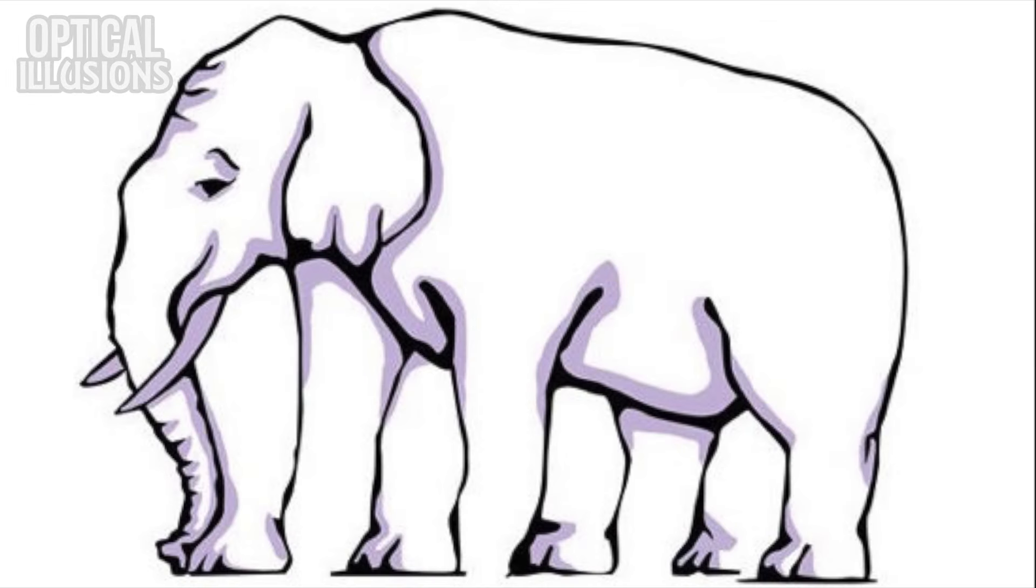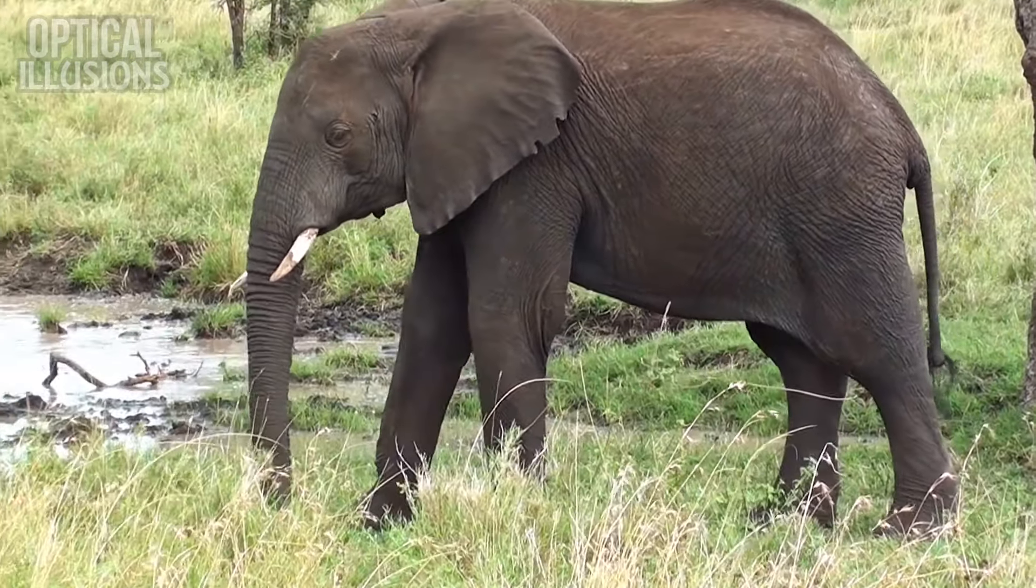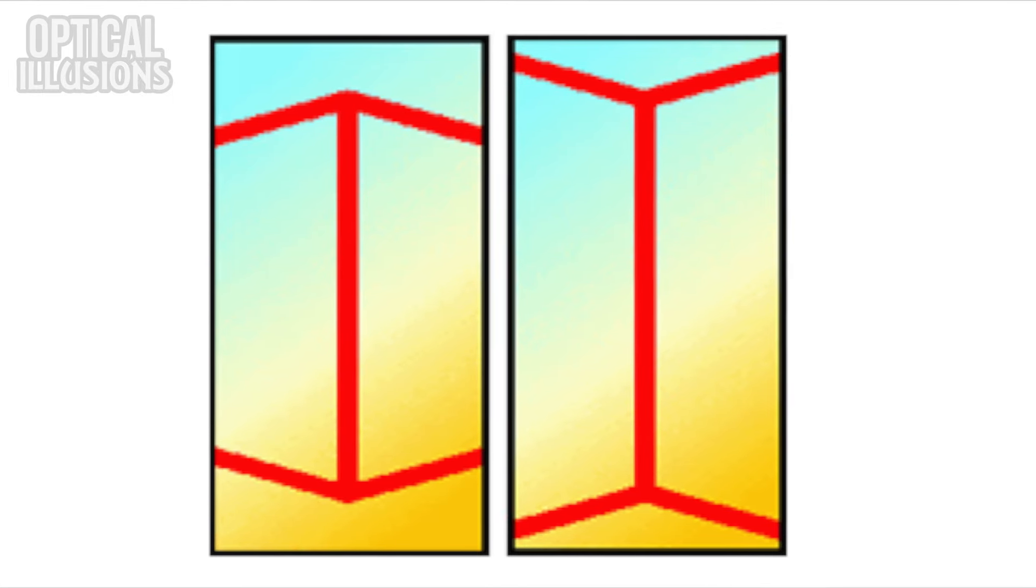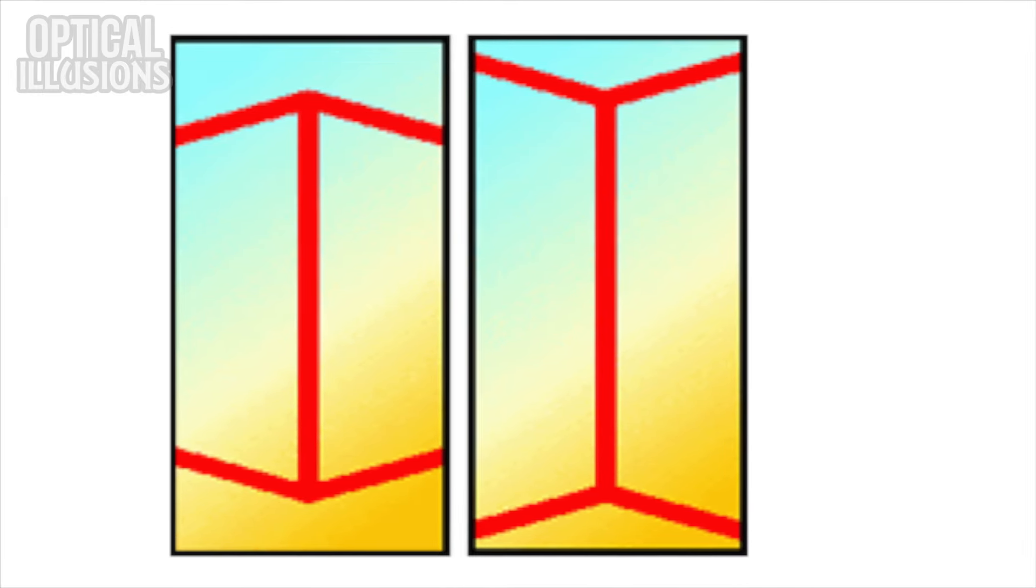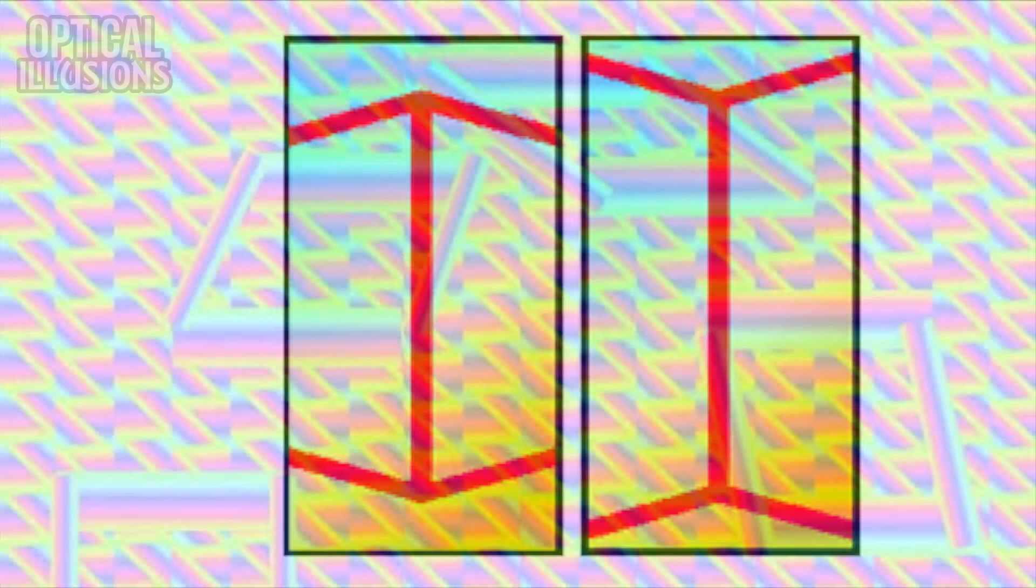Why does this elephant look to have a ton of legs? Because our brains don't understand how to interpret the impossible lines in reference to our idea of what an elephant should look like. Why does this image look like there are black dots where each line crosses? Because our brains make assumptions about contrast and patterns when not in focus to help us stay safe. Why do these center lines look like different sizes? Because the reference lines our brains use as scale distort its ability to measure the size of the center line.